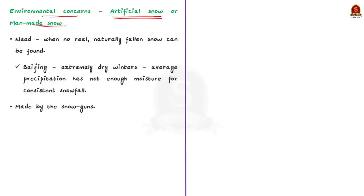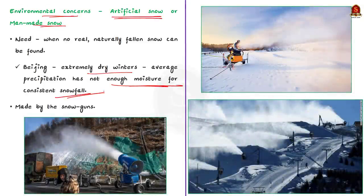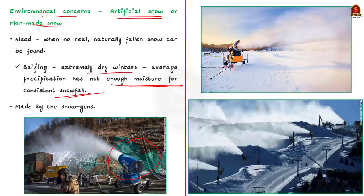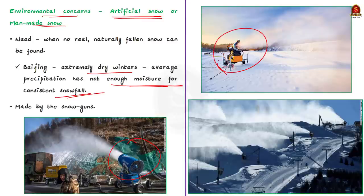So, there is only an average of 0.4 inches of precipitation during the months of December, January and February combined. So this means there is not enough moisture for consistent snowfall here. Therefore, to balance the needed snow, artificial snow is made. They are made using snow guns. We will see the process involved in making snow some other day. Today, let us just see the environmental concerns associated with snow guns.